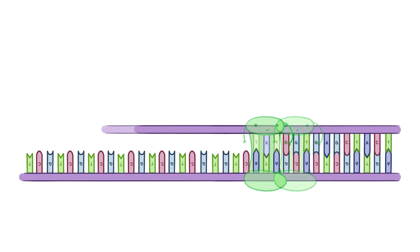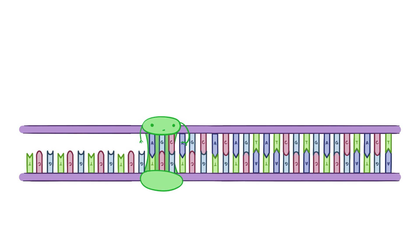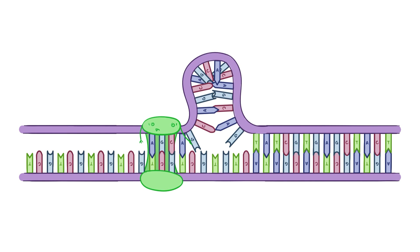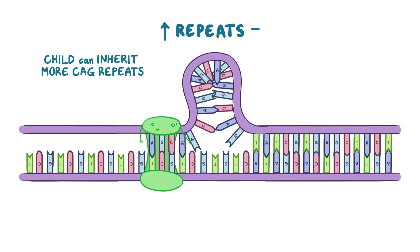The expanded CAG repeats also affect DNA replication itself. When copying the mutated gene, DNA polymerase can basically lose track of which CAG it's on, and accidentally add extra CAGs. This expansion of the originally inherited gene means a child of a parent with the disease can inherit even more CAG repeats than the parent. The higher the number of repeats in the protein, the earlier the age of onset, and the more severe the symptoms.